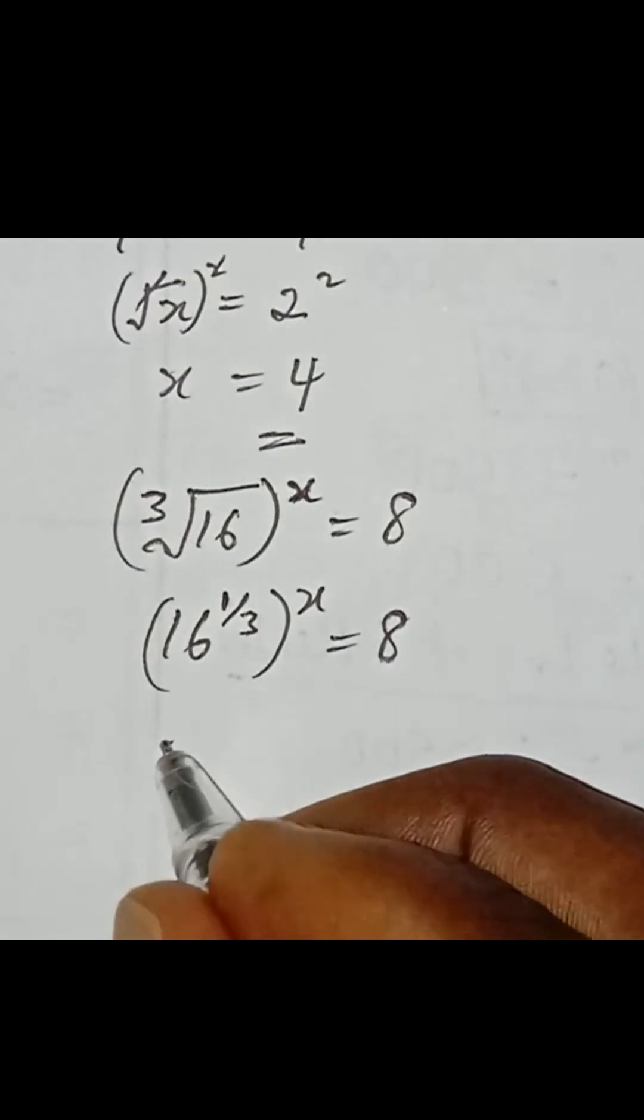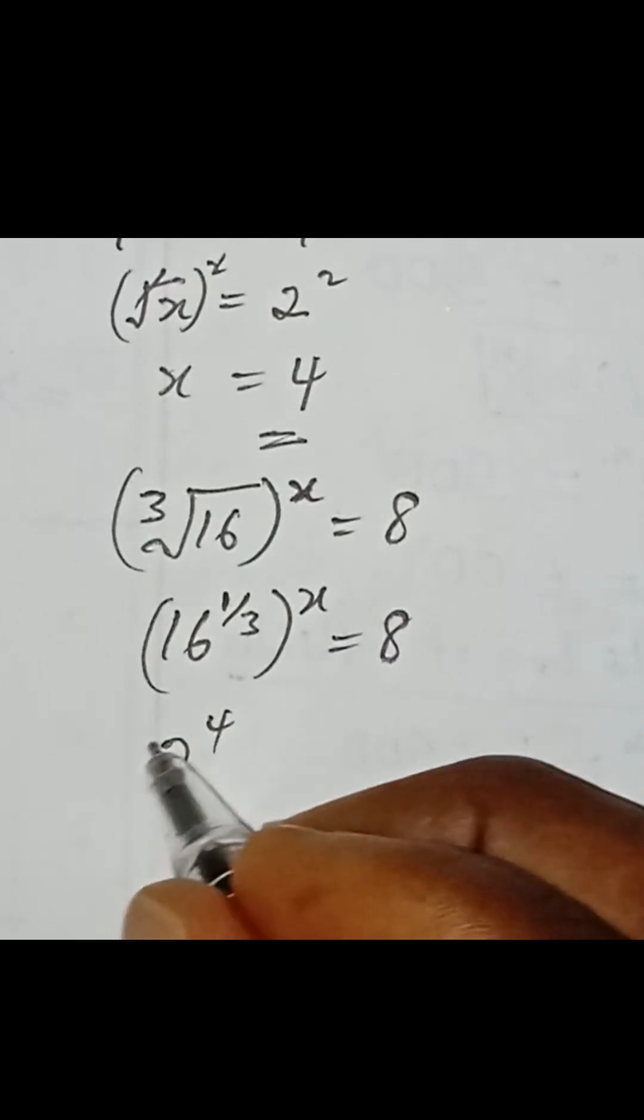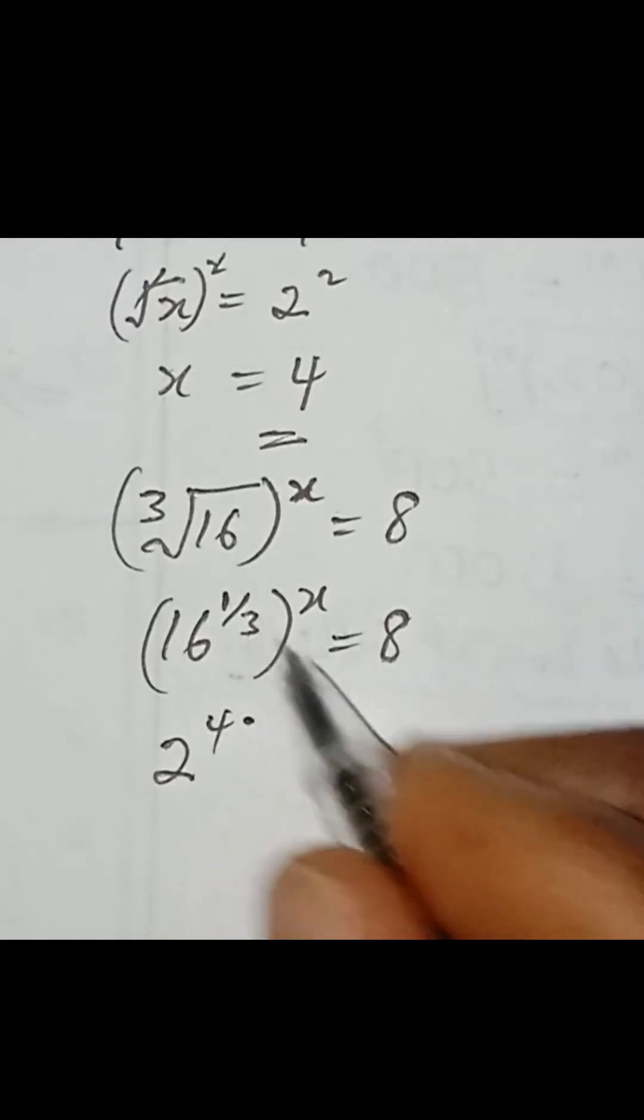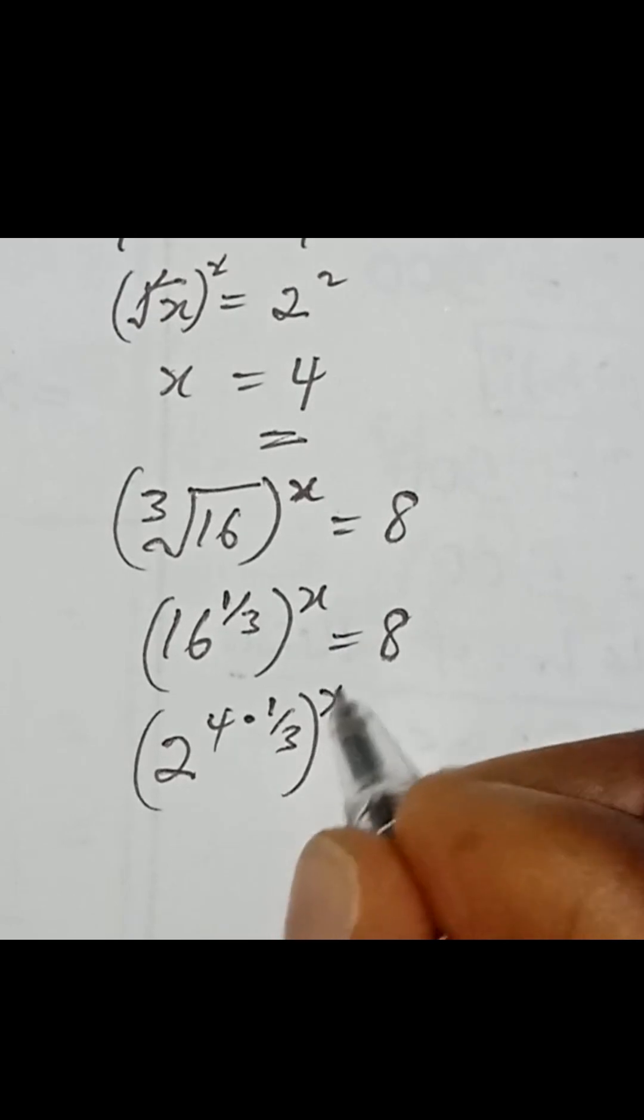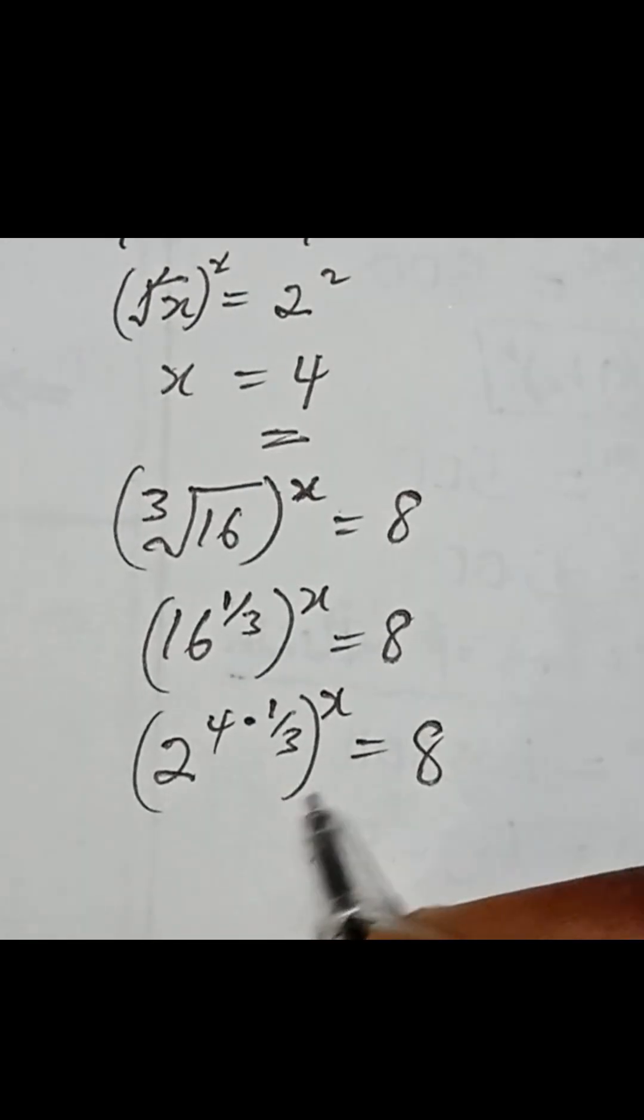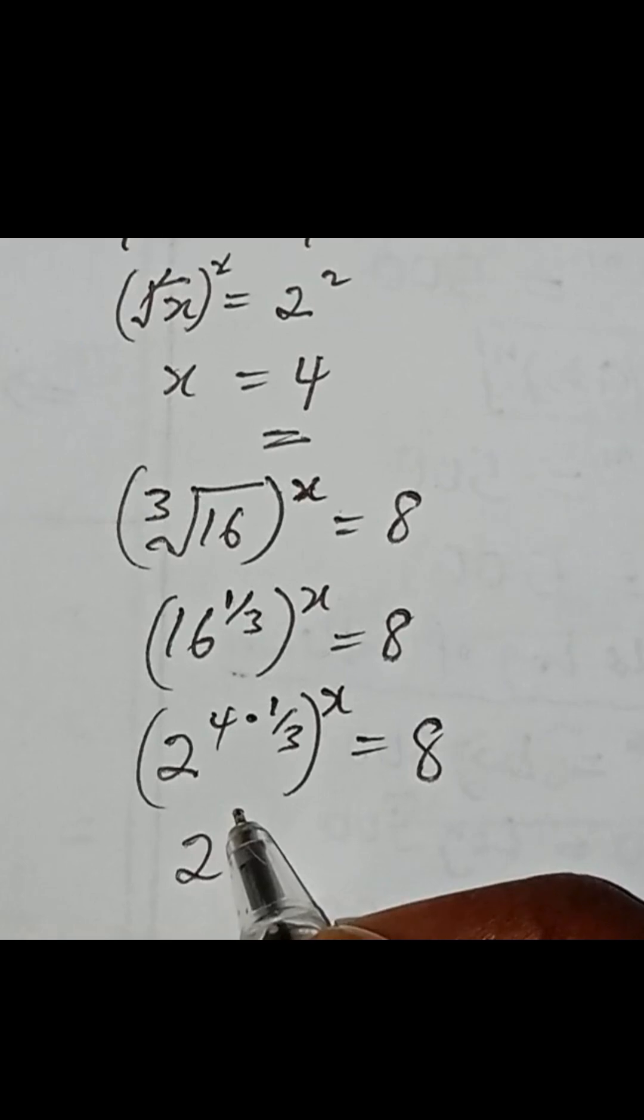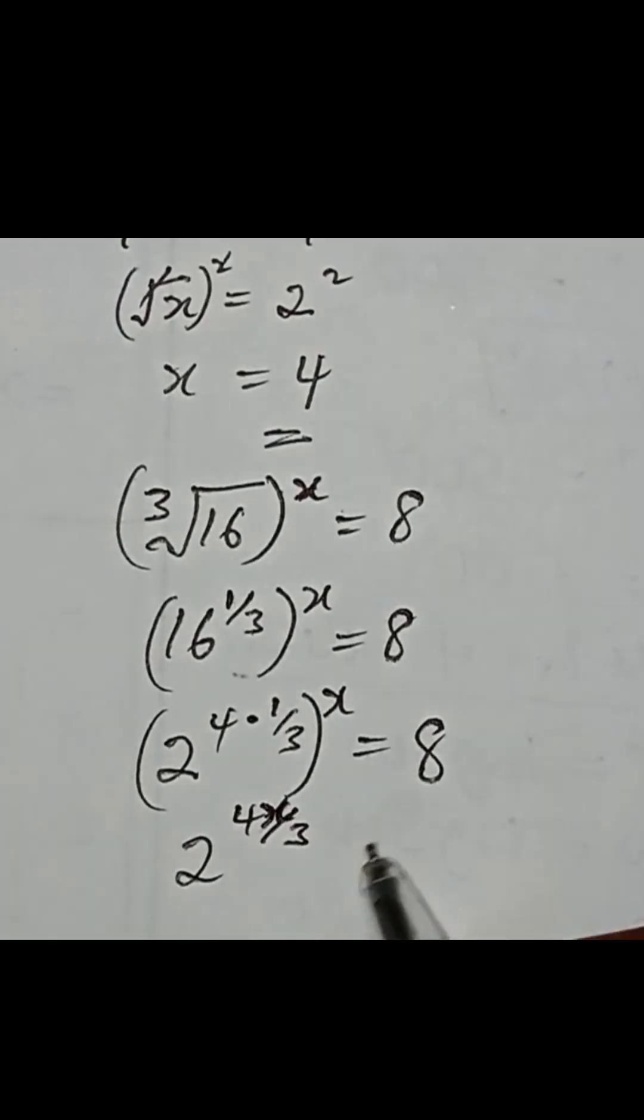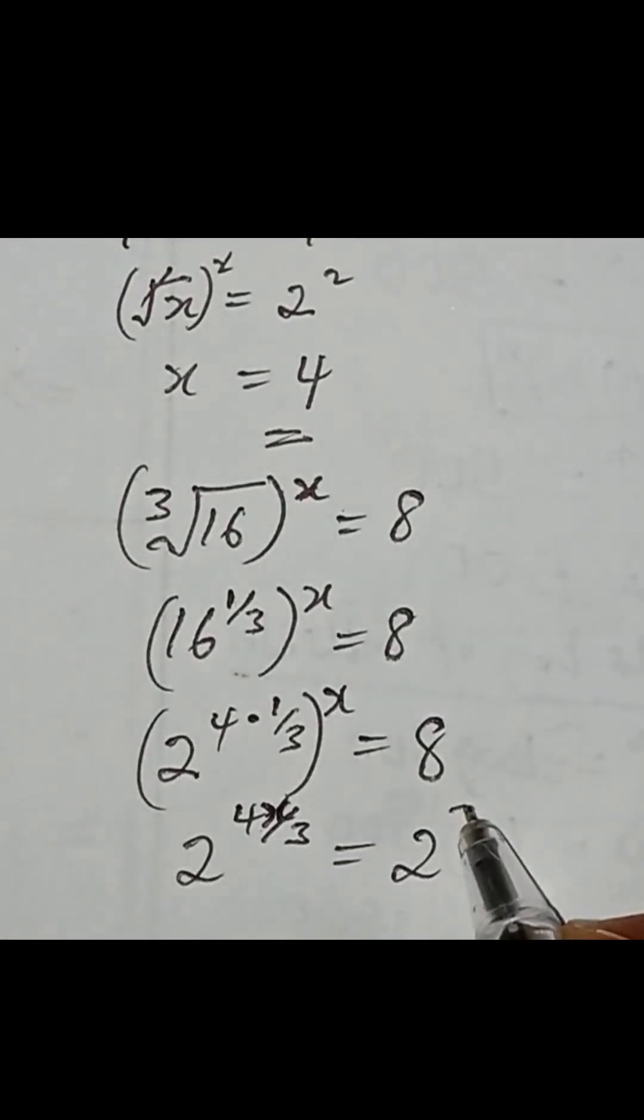Then reduce this base to 2 to the power of 4 in bracket. That will be multiplied by this 1 over 3, then in bracket to the power of x equal to 8. Then the whole of this can be written as 2 to the power of 4x over 3 equal to this can be reduced to 2 to the power of 3.